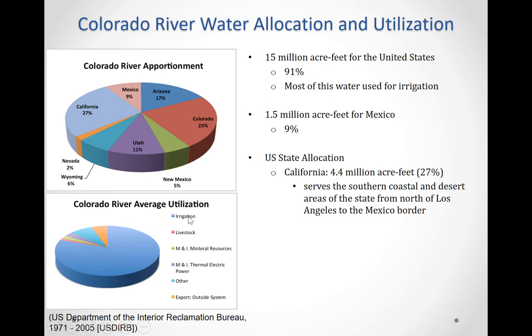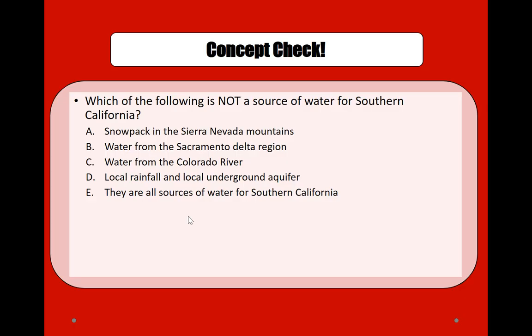Most of the water received from the Colorado River is used for irrigation purposes to provide food for all of the population in the region.